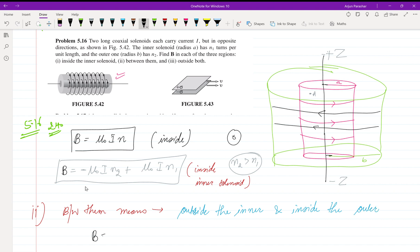B is equal to μ₀I. If you are talking about inside the outer solenoid, the direction is reversed, so B = μ₀In₂. Let me check the diagram to make sure this is correct.